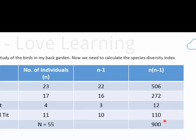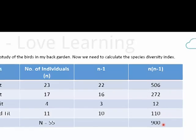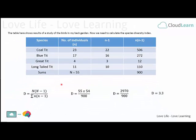Then we add up all of these to give us 900 at the bottom. That's the sum of the N times N minus 1s, as you can see at the bottom here.